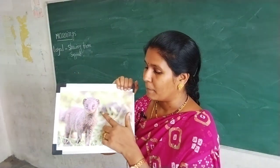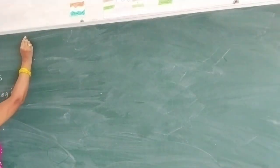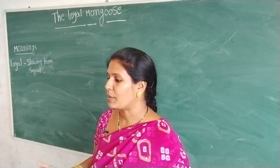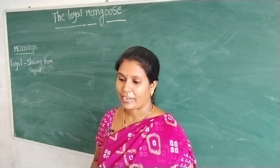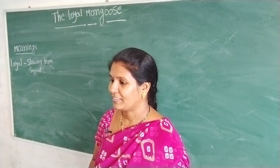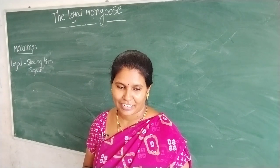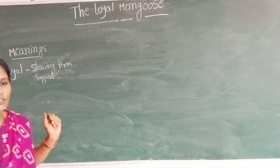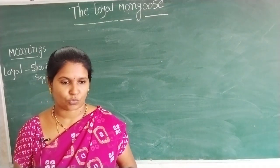Today I am going to explain the mongoose lesson. Let's get started. The lesson name is 'The Loyal Mongoose.' I will ask you some questions. Do you have any pet animal? Yes, madam, I have. What is the name of your pet animal? Jimmy, madam. Which animal do you like? Dog. Name the animals you see in your area: dogs, cats, buffaloes, cows. Very good. Loyal means showing firm support — this is called faithfulness. Our pet animals always show faithfulness towards us.